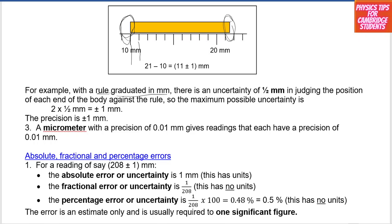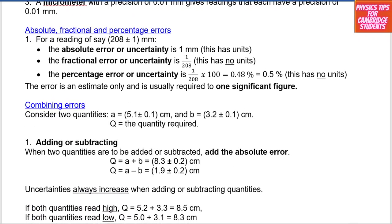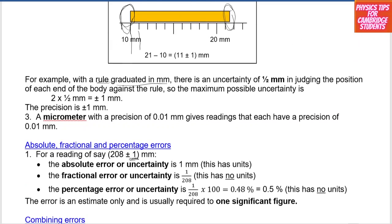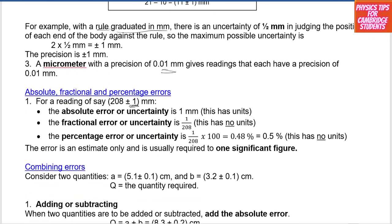A micrometer with a precision of 0.01 millimetres gives readings that each have a precision of 0.01 millimetres. Now let's look at these uncertainties. We have absolute uncertainties, fractional uncertainties, and percentage uncertainties. Absolute uncertainty is the uncertainty from the measuring instrument itself. For example, a reading of 208 ± 1 mm means the instrument used is a metre rule, since the metre rule measures to a precision of ±1 mm. A micrometer measures to 0.01 mm, and a vernier calliper also measures to an accuracy of 0.01 mm.